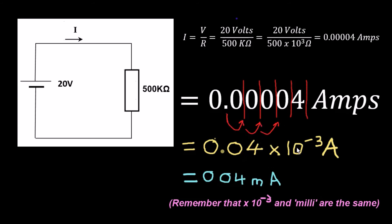So moving it three times, remember, the decimal point comes from here. It's now one, two, three. It's now over here. So it's now 0.04. And then because I've moved it three places, I have to say times 10 to the power minus three amps.